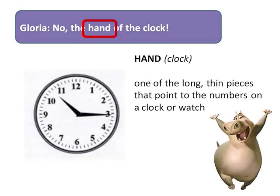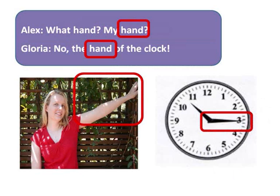You got it right! What I was actually referring to was the long thin piece that points to the numbers of a clock or a watch. This is what I was referring to, Alex. So you can see the word 'hand' has two meanings here — one refers to the body part which we may use to point, and the other refers to the pieces of a clock which are used to point to the time.